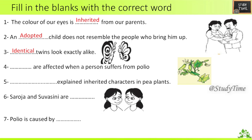Fourth — legs are affected when a person suffers from polio. Fifth — Gregor Mendel explained inherited characters in pea plants. Sixth — Saroja and Suvasini are twins. Seventh — polio is caused by a virus.